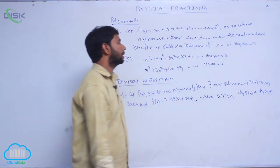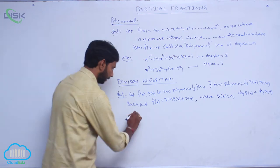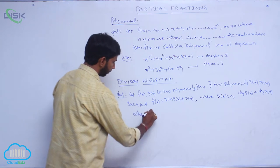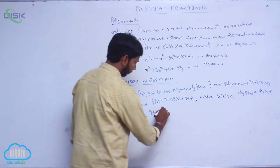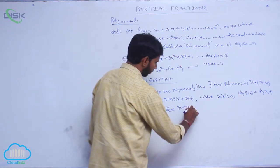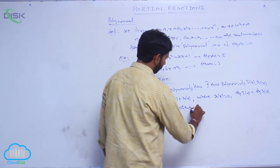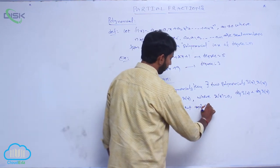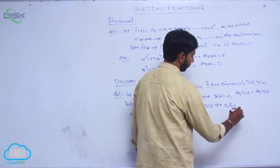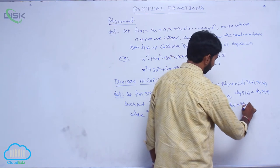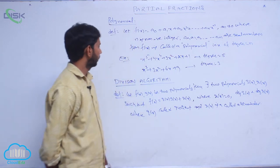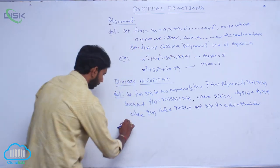Here, q of x is called the quotient and r of x is called the remainder.